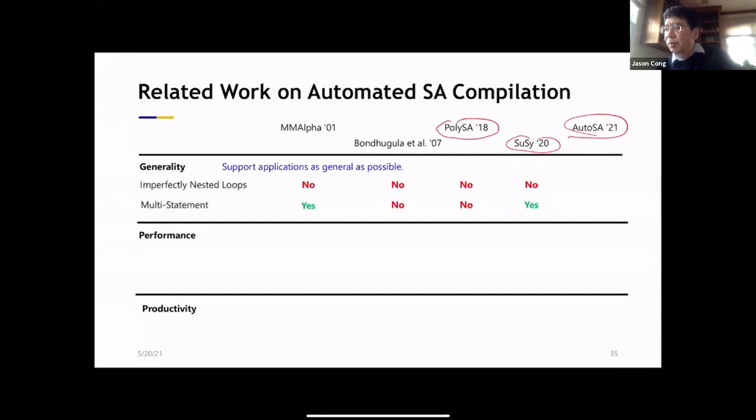So you can actually compare these tools in multiple dimensions. One is the generality - what kind of loops you can handle. Some of the tools can handle only perfectly nested loops, which means you only have one statement in the nested loop in a kernel. And some of them actually can handle multiple statements. By the way, don't be too disappointed if you only handle one statement in a kernel. Matrix multiplication, CNNs, all fits into that category. Even if you can do that, you can cover a big class of design space.